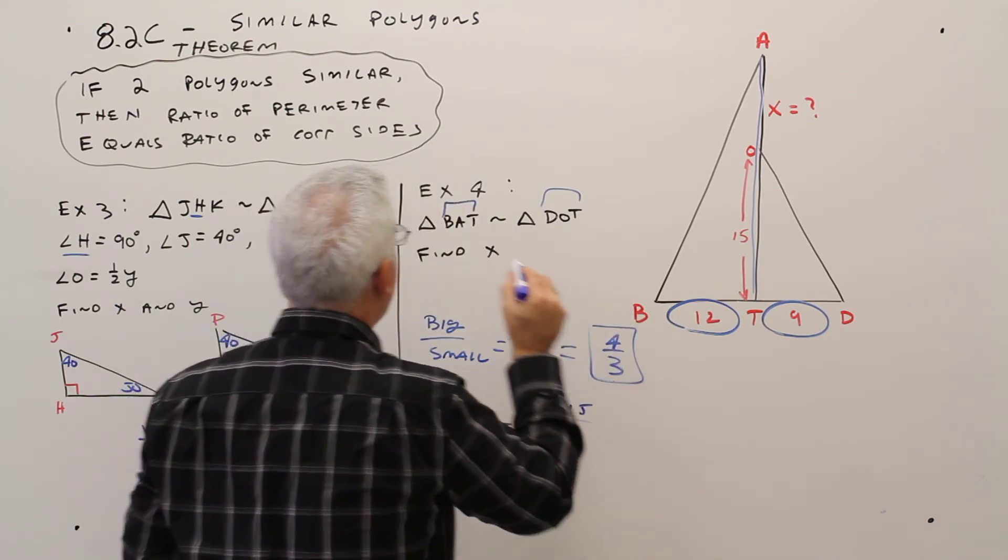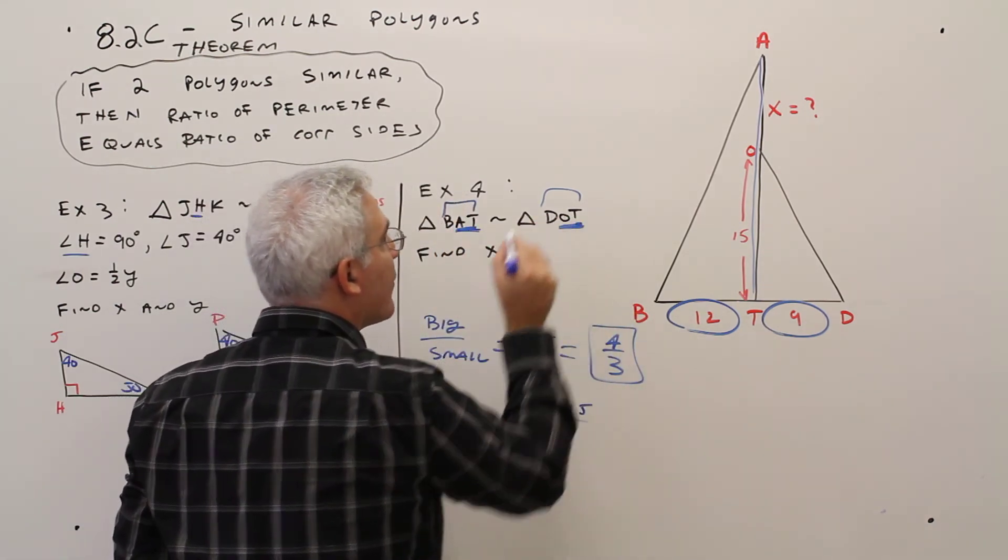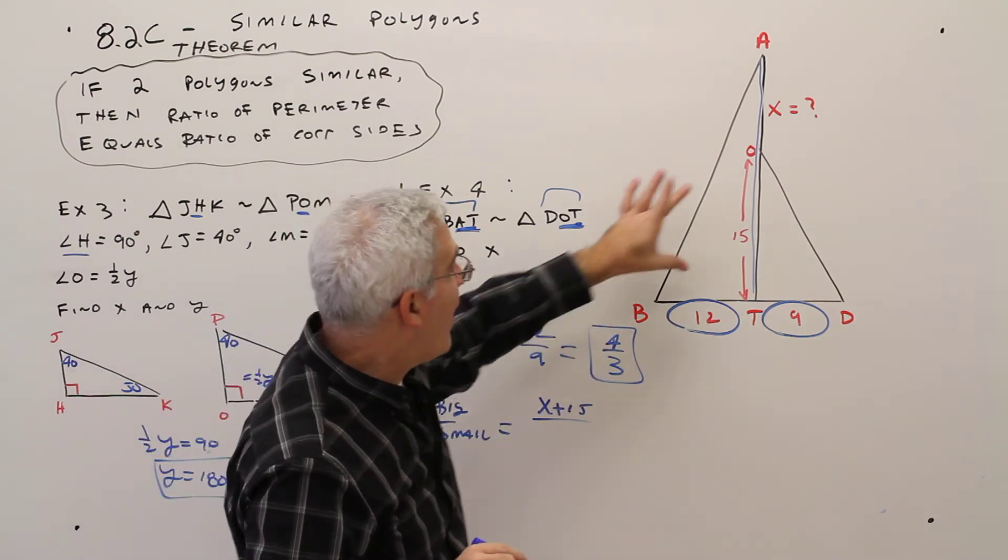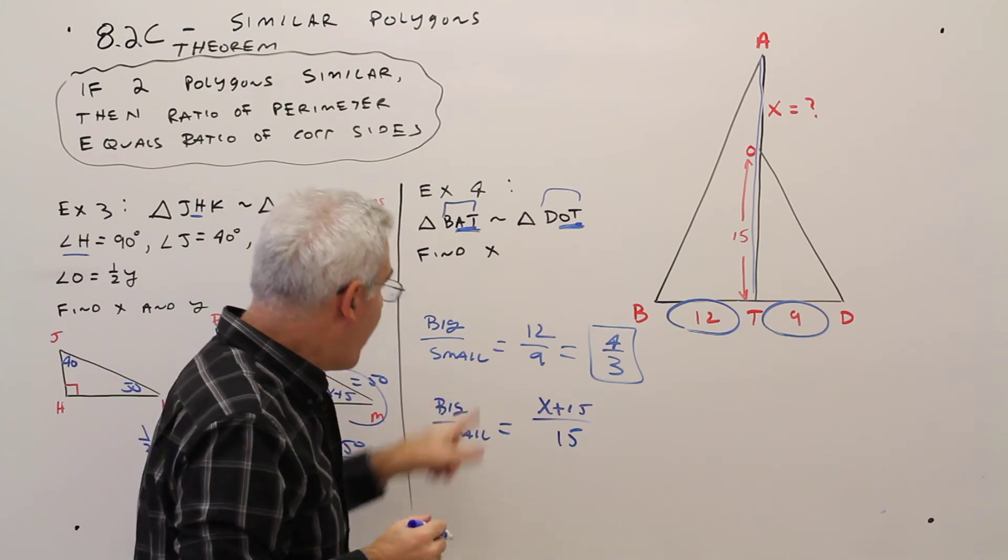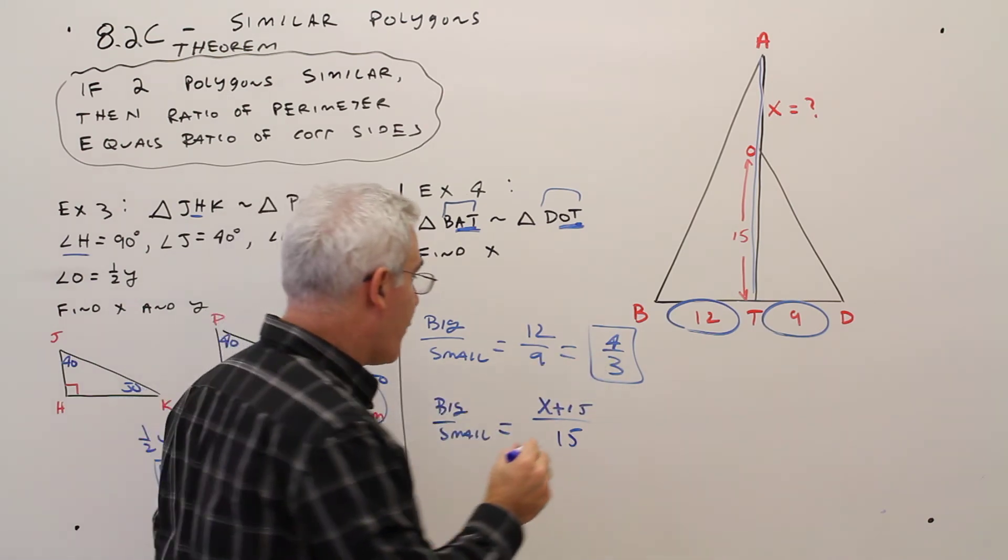So AT, last two letters, would correspond to OT, last two letters, over 15. Oh! And by the way, that ratio equals 4 over 3.